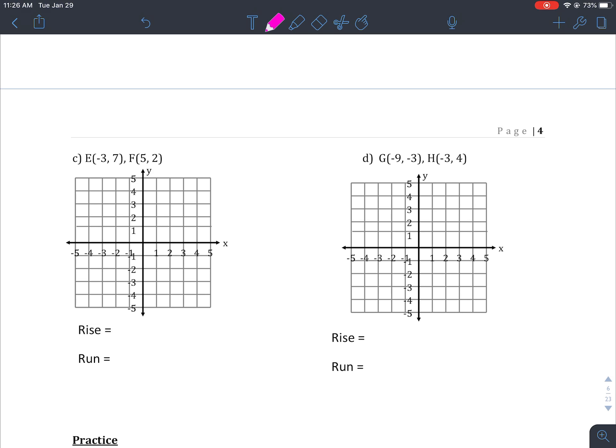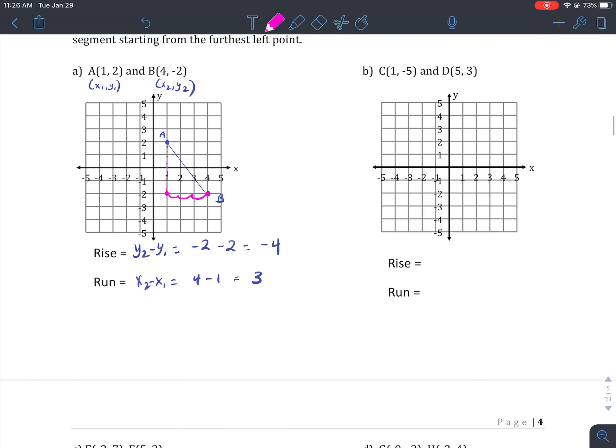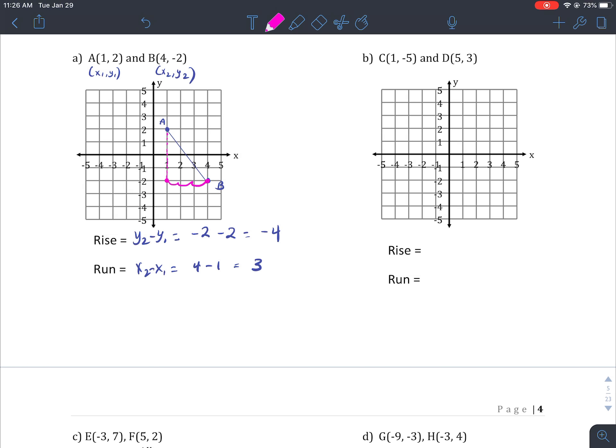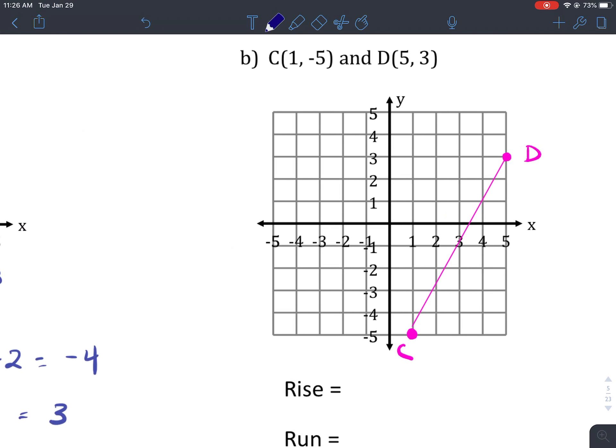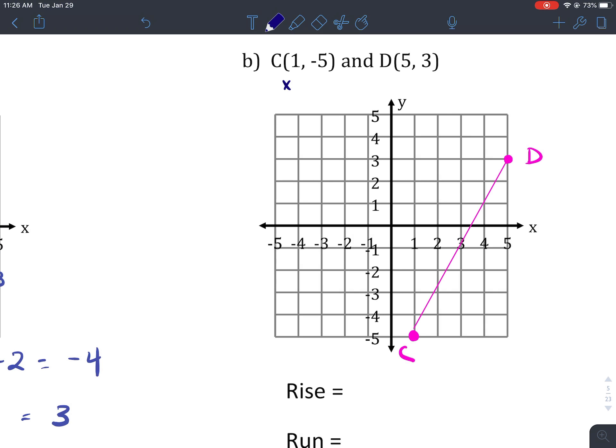So point G looks like it's negative 9, negative 3. Now that doesn't look very good, because my grid doesn't go that far. So maybe instead we'll do B. So point C is 1, negative 5, so 1, negative 5 is down here, that's point C. Point D is 5, 3. Okay, and again, we can connect those because this is a line segment.